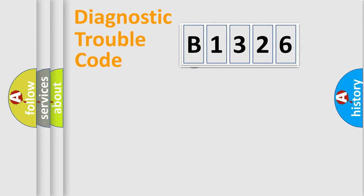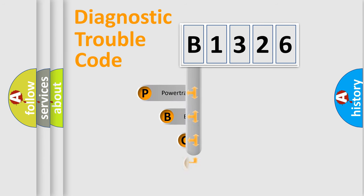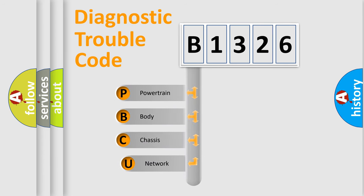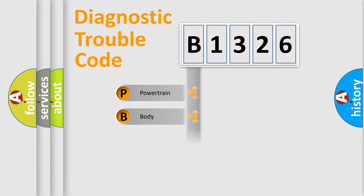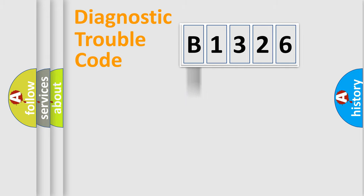Let's do this. First, let's look at the history of diagnostic fault code composition according to the OBD2 protocol, which is unified for all automakers since 2000. We divide the electric system of automobile into four basic units: Powertrain, Body, Chassis, and Network.